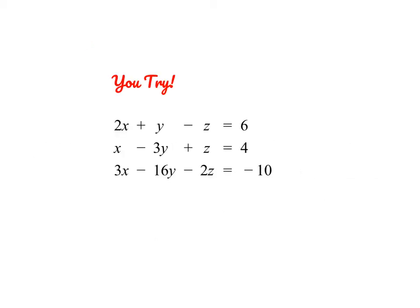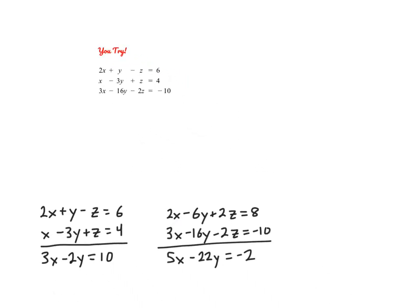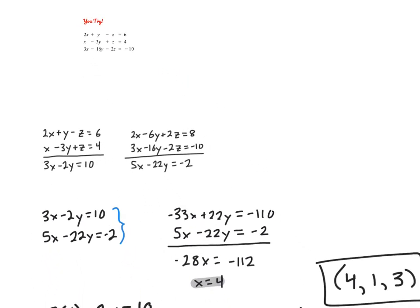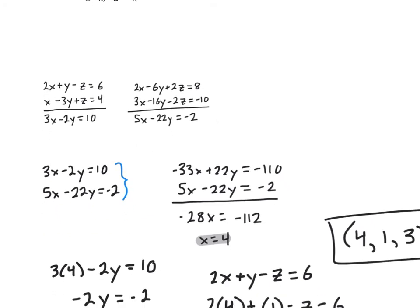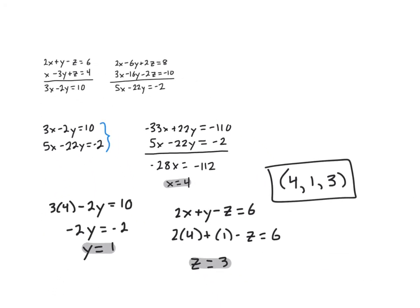Alright, here's another one for you to try. Go ahead and pause the video again and give it a go. Alright, so for this problem, you can see that I started out by eliminating my z values twice, giving me this system of two equations, which I rewrote right here. From there, I chose to solve using the elimination method, which I eliminated my y's, so I got a value of x, and I substituted to get y, and then I used my very first equation to find z. So your answer should be 4, 1, 3.